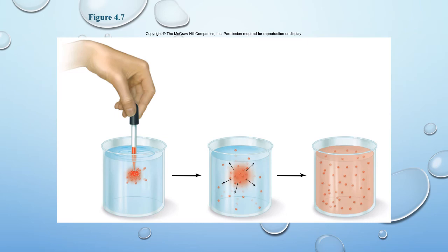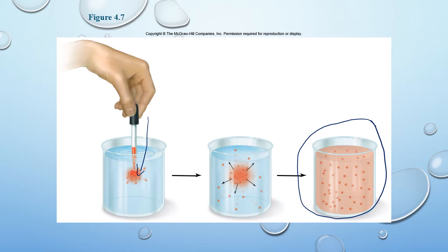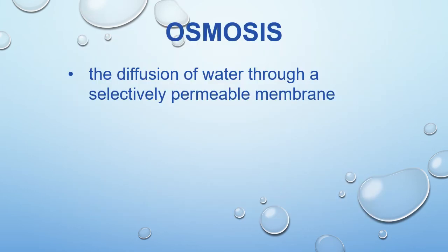Here we have the same concept: take a dropper with dye, put it into the water, and without stirring it, just give it some time. Eventually, we have a nice equal concentration all throughout the beaker. This is passive diffusion — we haven't had to do anything in order to get that concentration to be equal throughout the entire area.